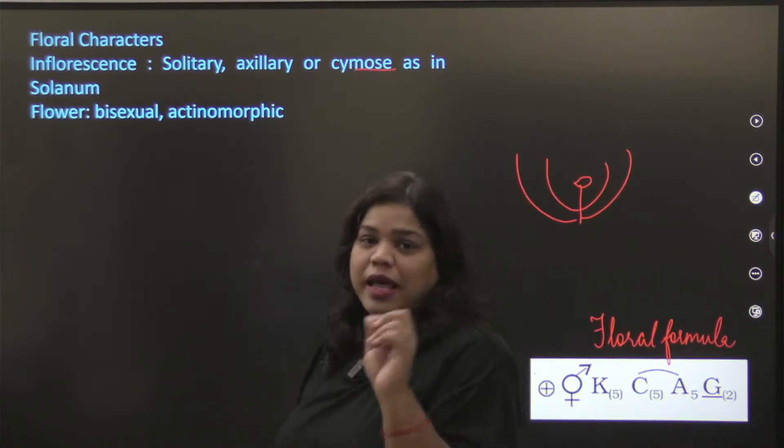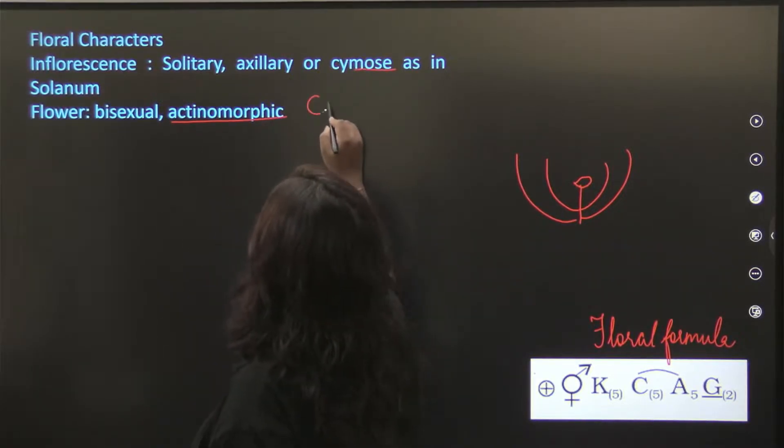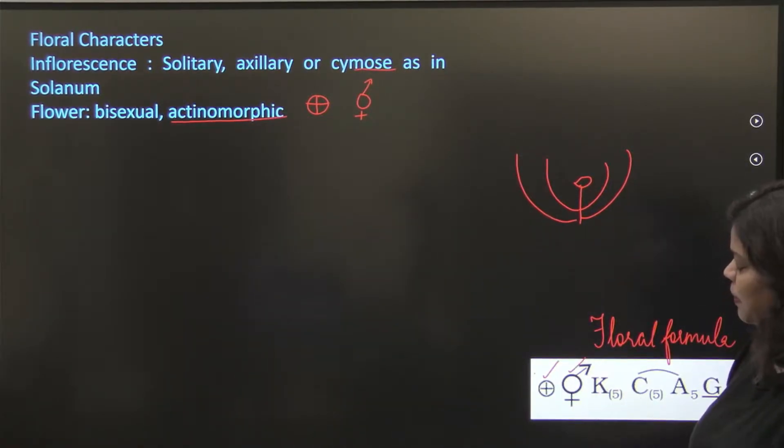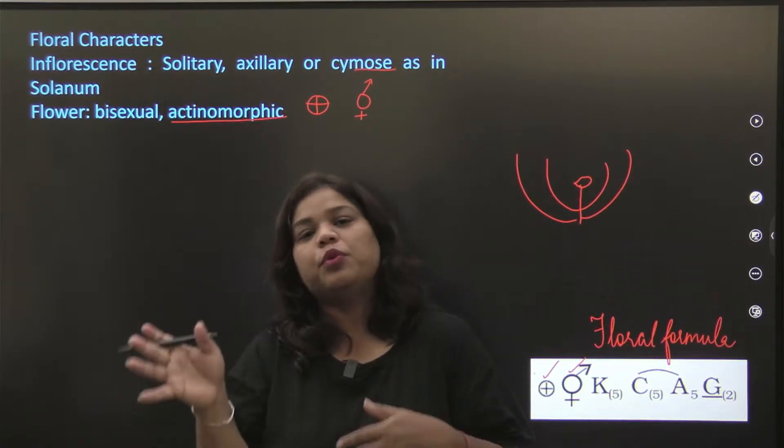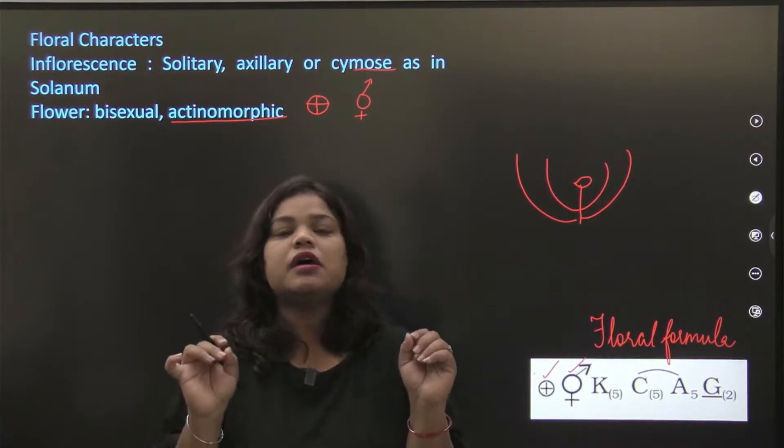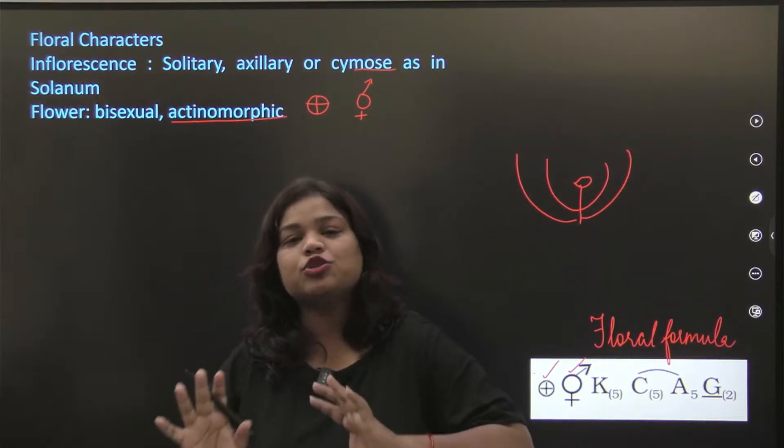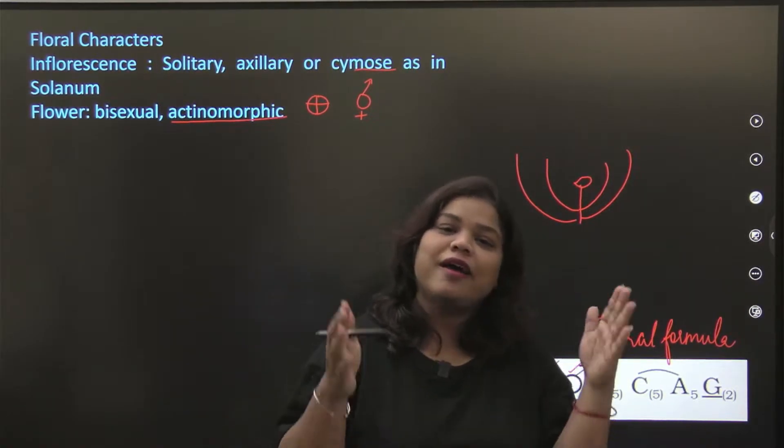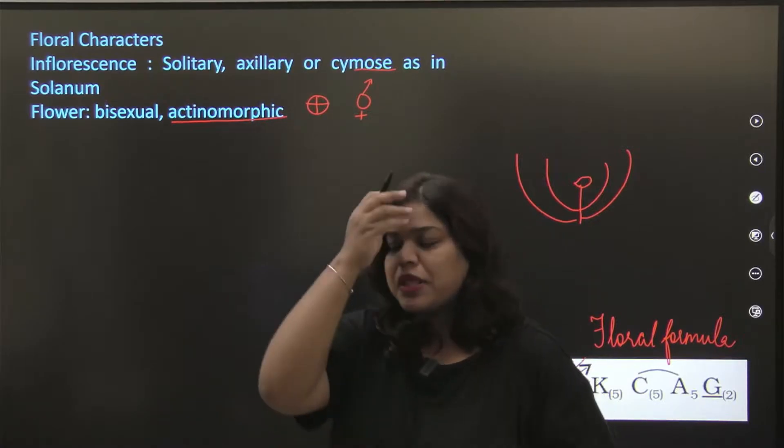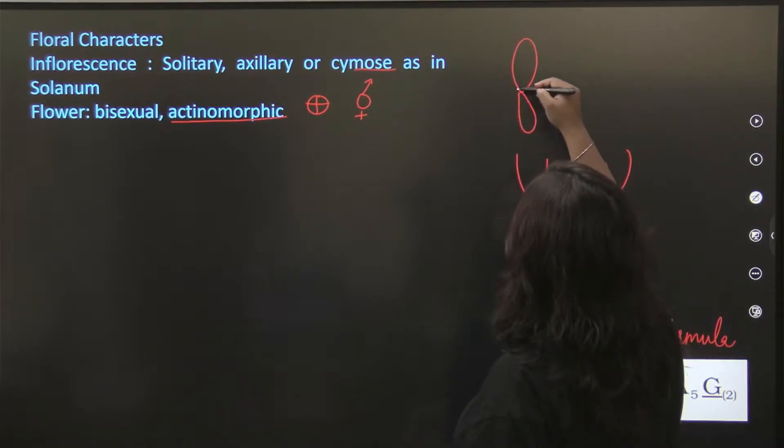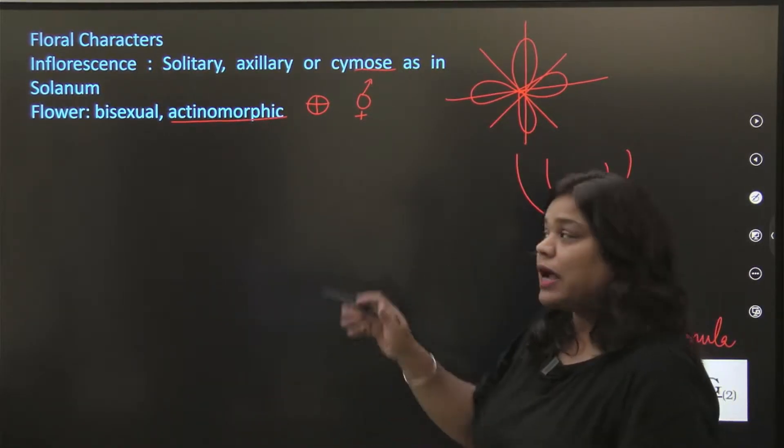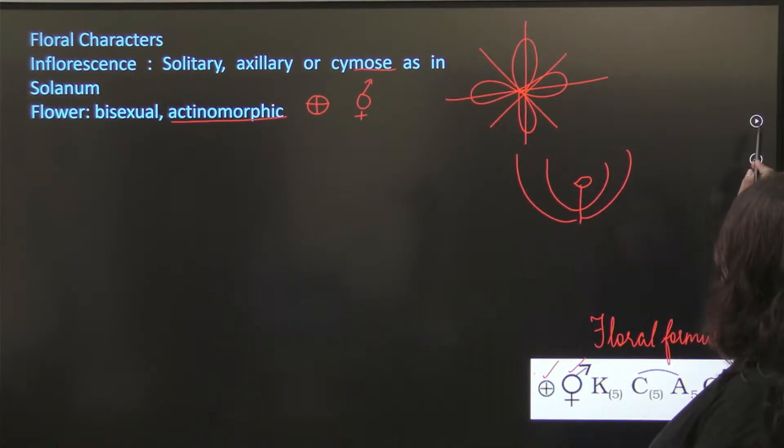The flower is bisexual, actinomorphic. Bisexual. Actinomorphic. Now what do you understand by bisexual again? It means that anthers and carpel both are present in the flower. That means it is a hermaphrodite flower. We have already discussed hermaphrodite, bisexual. If you missed, you have to watch the bottom, you will see the videos. So here what we are talking about, actinomorphic. Cut in any plane, we will get two equal halves which will pass from the center. So that is your actinomorphic.